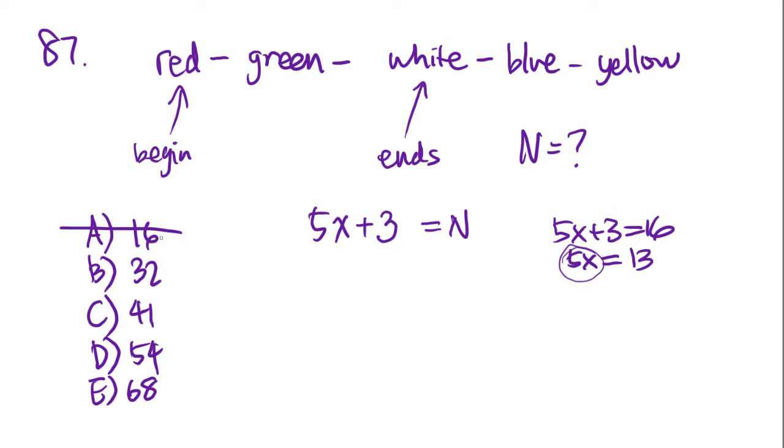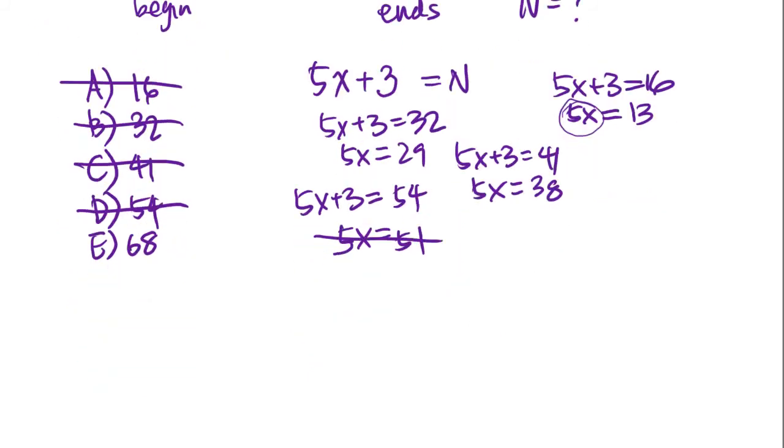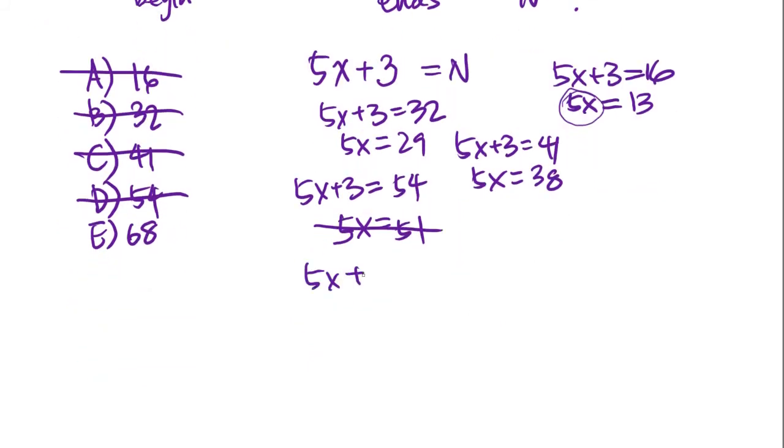32, that's twice of A, so I'm guessing this probably isn't going to work. 5x plus 3 equals 32, you get 5x equals 29. Yeah, it doesn't work. C, 41. 5x plus 3 equals 41, you get 5x equals 38. Again, that doesn't work. Try 54. 5x plus 3 equals 54. 5x equals 51. So close. And finally, let's try answer choice E. 5x plus 3 equals 68. 5x equals 65. Yes, and that definitely is divisible by 5. So E is going to be our answer choice.